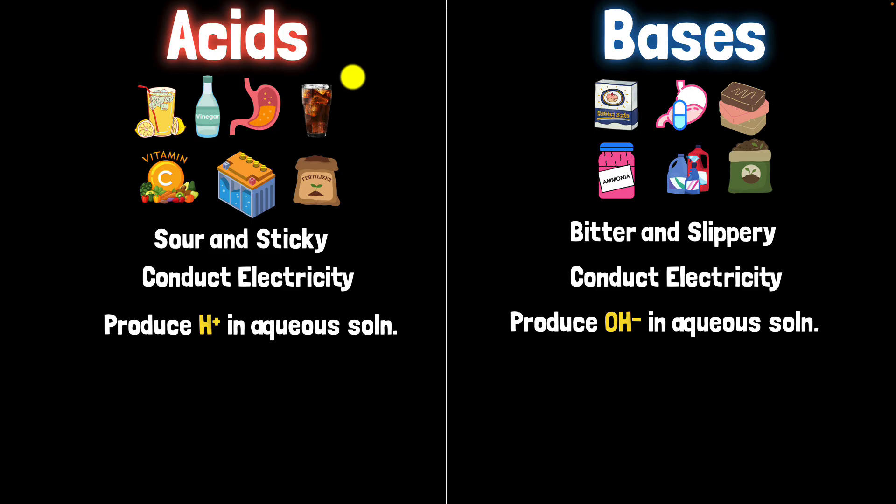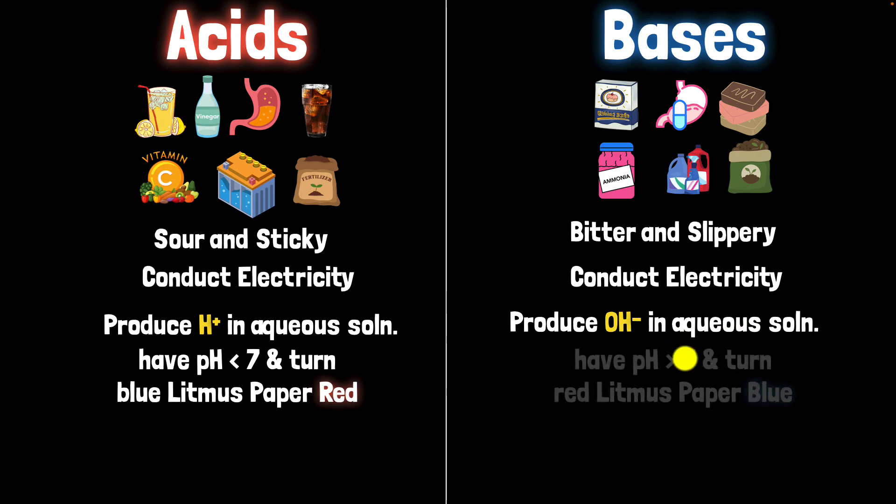Finally, we can go back and complete our definition of acids and bases. Acids are the substances that produce H plus in aqueous solution and have a pH which is less than 7 and turn blue litmus paper red. What about bases? Well, they are the substances that produce OH minus, hydroxide in aqueous solution. And they have a pH which is more than 7 and turn red litmus paper blue.